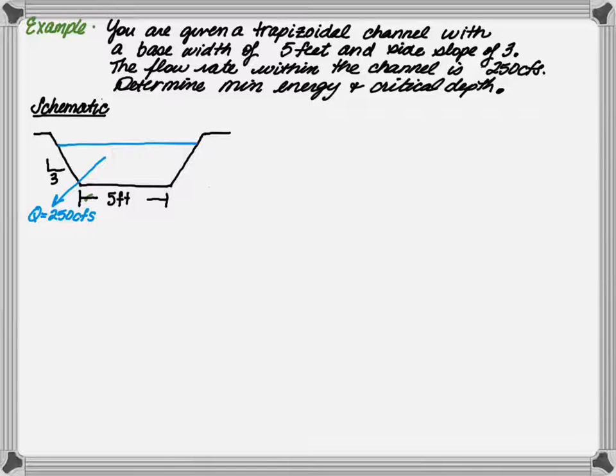Our next example has a similar case. You're given a trapezoidal channel with a base width of 5 and side slopes of 3 to 1. The flow rate is still 250 CFS. This time, we want to determine the minimum energy and the critical depth.